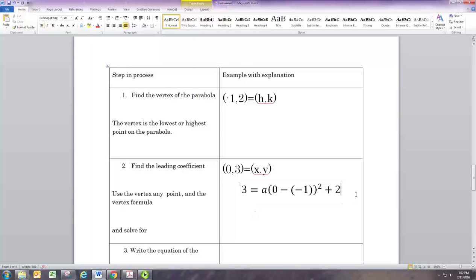We have an equation that just has a. We can solve for a. 0 minus negative 1, that's just 1. And 1 squared is just 1. And a times 1 is just 1, so that all just goes away. The plus 2 we can get rid of by subtracting 2 from both sides. Positive 2 and negative 2 add to 0, and 3 minus 2 is 1. So a is 1.